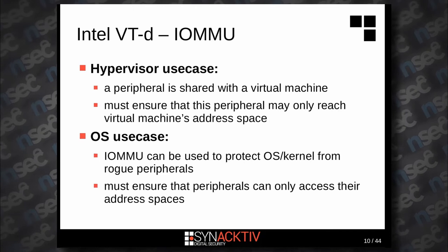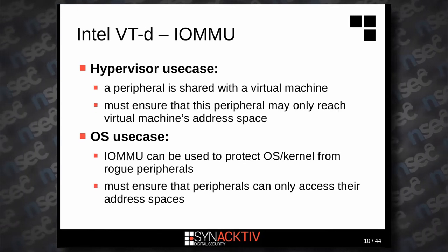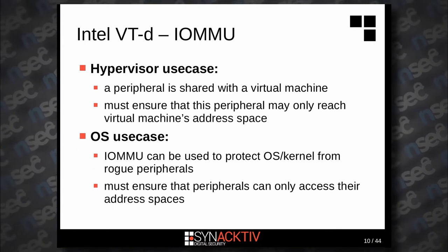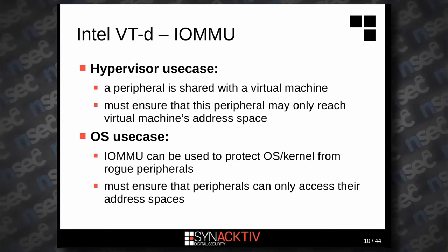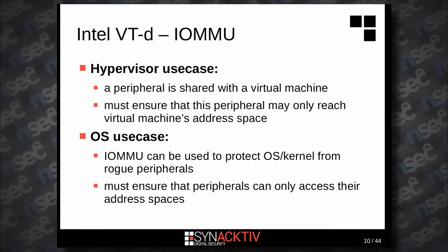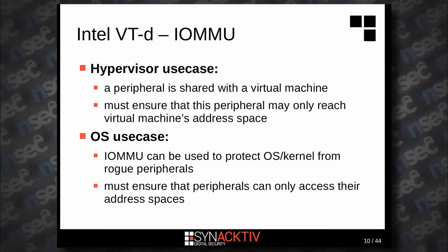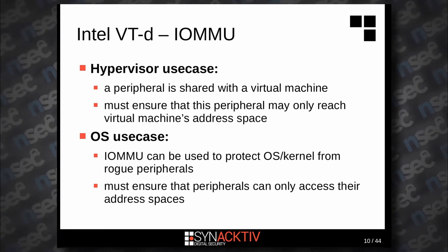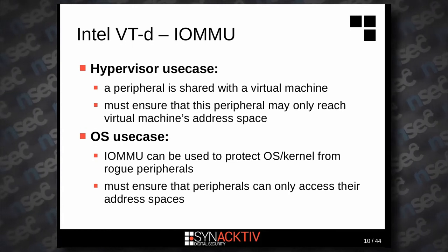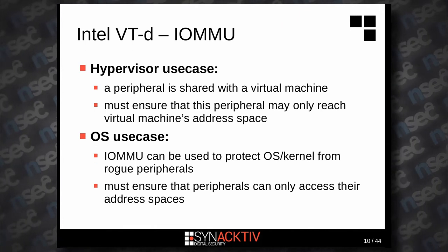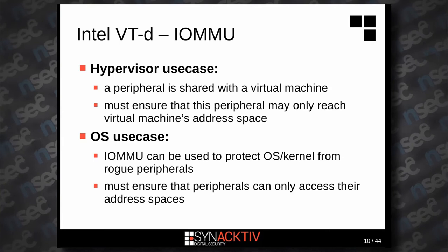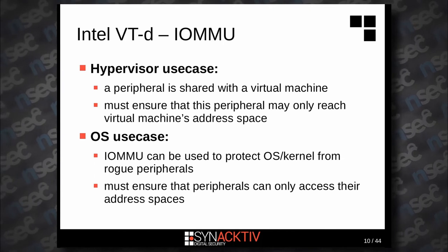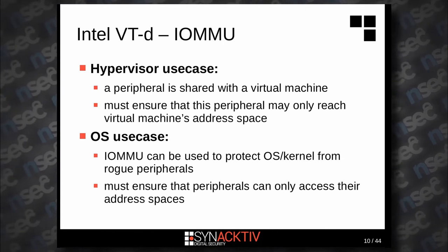We'll finish this introduction with some IOMMU use cases. The first, well-known one, is the hypervisor use case: imagine a virtual machine with a peripheral attached — I don't want that peripheral to access the host's main memory. In the OS use case it's pretty much the same: I want to protect my OS or kernel from rogue peripherals, so peripherals must only be able to access their own memory pages.